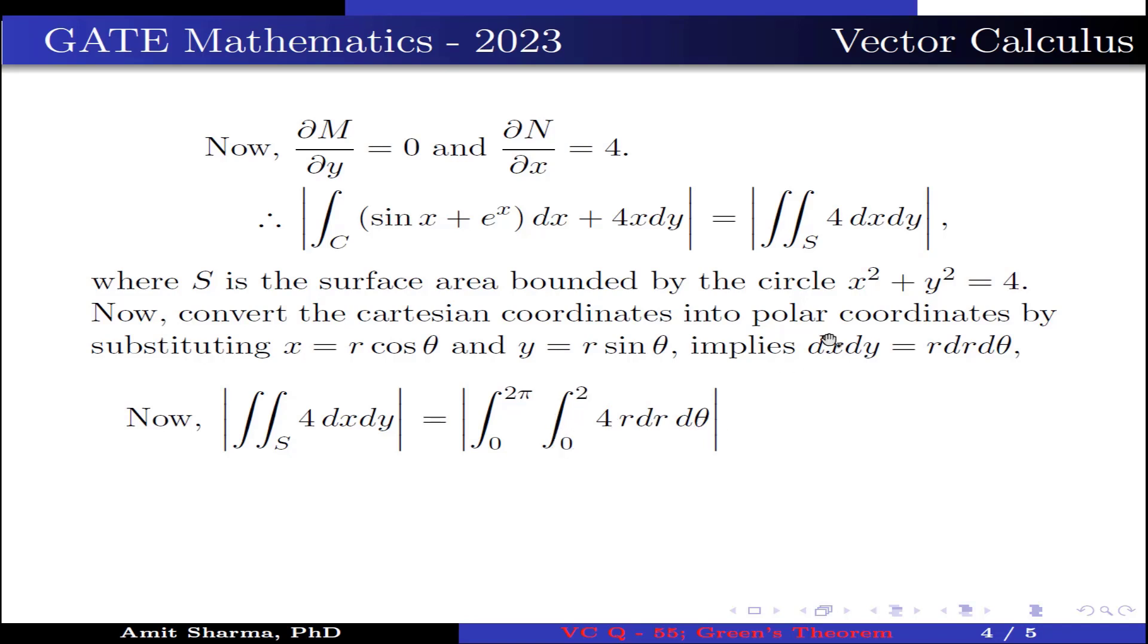Why it is so? Because it is a circle of radius 2, meaning the limit of r is 0 to 2, and for a complete circle, the value of θ varies from 0 to 2π.